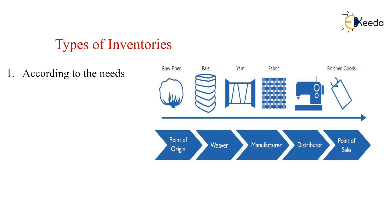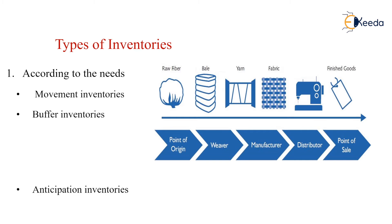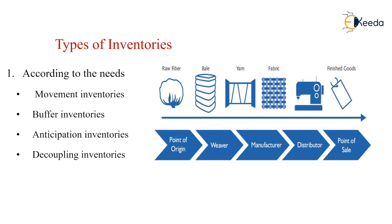They are: according to the needs, and according to the functions. According to the needs, we are having the movement inventories, the buffer inventories, the anticipation inventories, and the decoupling inventories.